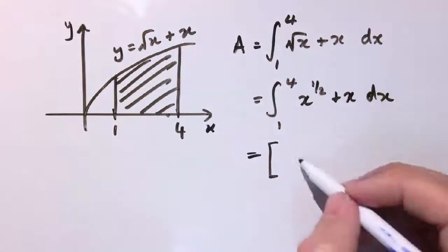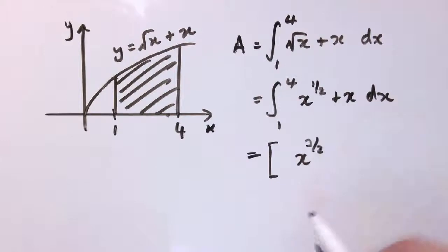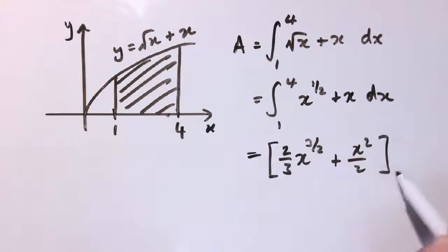So we now do the integration, and we get x to the 3 over 2, increasing the power by 1, and now we divide by this new power, so we get 2 thirds x to the 3 over 2 plus x squared over 2. Any problems with these integrations go back to the previous videos.